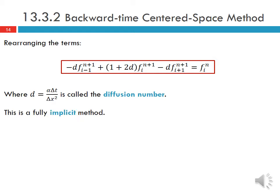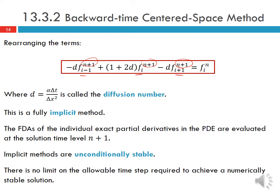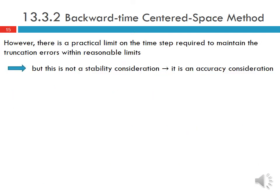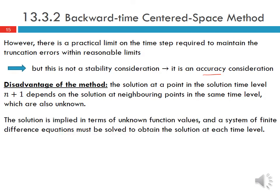This is a fully implicit method, with all values evaluated at time level N+1. Implicit methods are unconditionally stable, so there is no limit on the allowable time step required to achieve a numerically stable solution. However, there is a practical limit on the time step required to maintain truncation errors within reasonable limits — this is an accuracy consideration, not a stability consideration. The disadvantage is that the solution at each point in time level N+1 depends on neighboring points at the same time level, which are also unknown, requiring a system of finite difference equations to be solved at each time level.